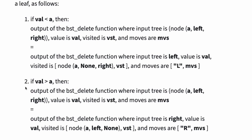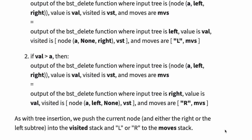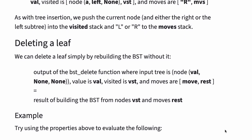Property 2: if val is greater than A, then the output of the BST delete function is equal to the output of the BST delete function where input tree is right, value is still val, visited is the stack with node A left none and VST, and moves are R MVs. As with tree insertion, we push the current node and either the right or the left subtree into the visited stack, and L or R to the move stack.